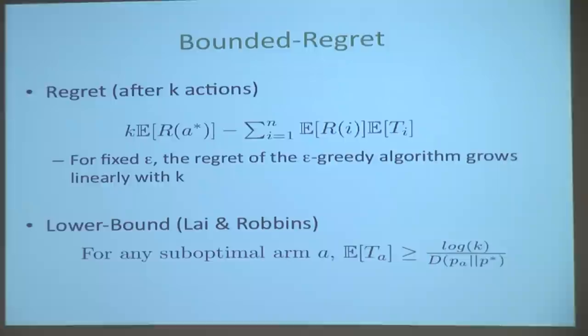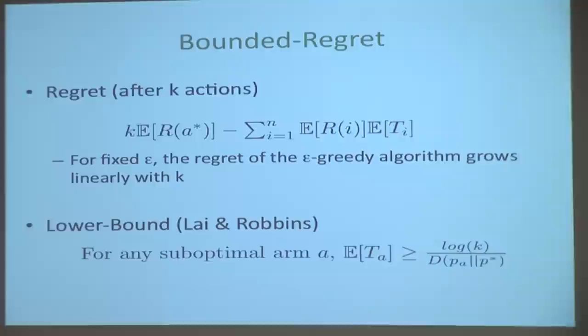Let's talk about a different form of exploration and exploitation that comes from the notion of regret. Regret after k actions is k times what you would have gotten pulling the optimal arm, minus what you actually did. E[T_i] is the expected number of times you pulled arm i; E[R_i] is the expected return from arm i. This difference is regret. It turns out there's an ancient lower bound showing that you can't get regret smaller than log k.